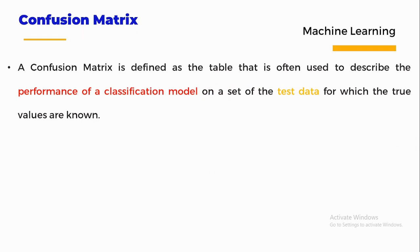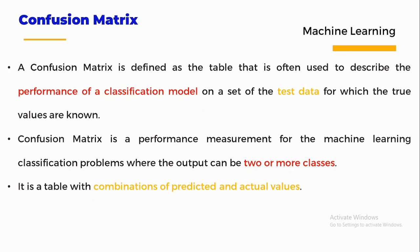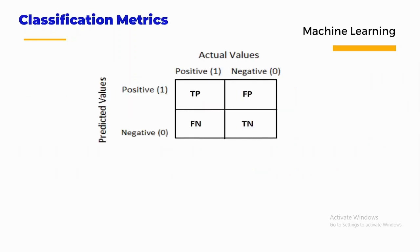The first classification metric is the confusion matrix. The confusion matrix is a table often used to describe the performance of a classification model on a set of test data for which the true values are known. It is a performance measurement for machine learning classification problems where the output can be two or more classes — a table with a combination of predicted and actual values. It contains true positive, false positive, false negative, and true negative values.